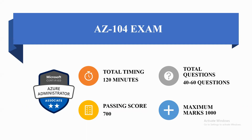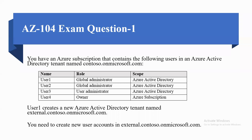Question number one: You have an Azure subscription that contains the following users in Azure Active Directory tenant named contoso.onmicrosoft.com. User 1 has a role of Global Administrator, scope is Azure Active Directory. User 2 has a role of Global Administrator, scope is Azure Active Directory. User 3 has a role of User Administrator, scope is Azure Active Directory. User 4 has a role of Owner, scope is Azure subscription.